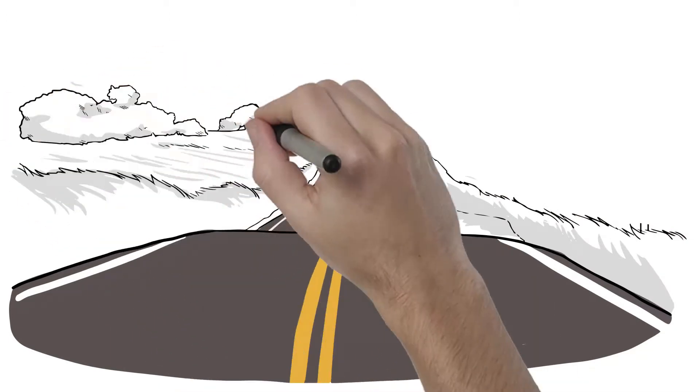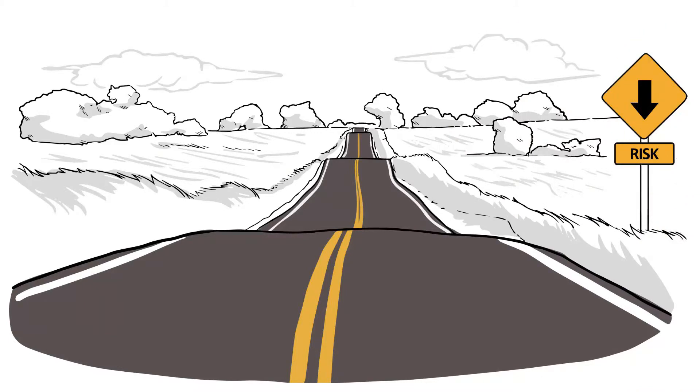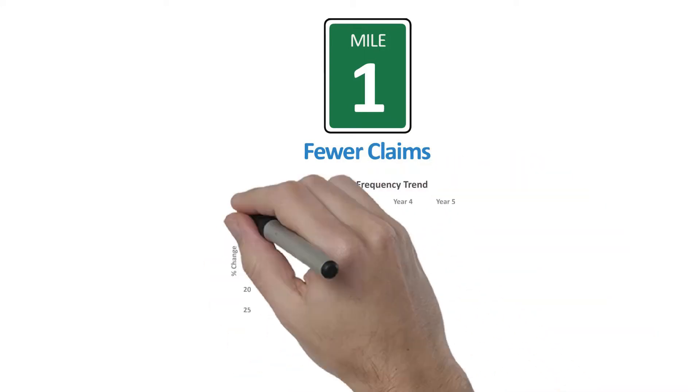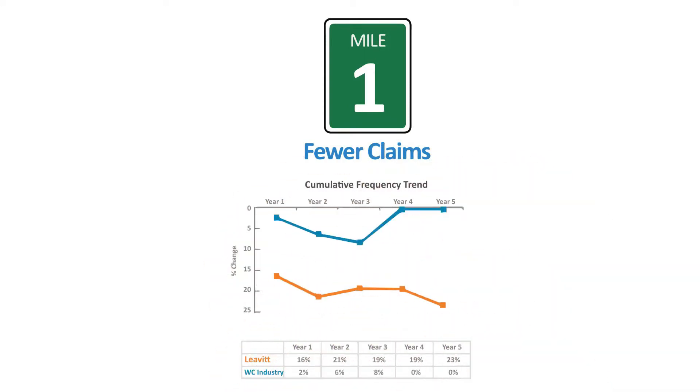This proactive approach followed a journey where each step, or mile marker as it's referred, focused on achieving a specific goal. Their first goal focused on reducing the number of injury claims. By reducing injury risk and keeping their employees safe, they saw an immediate decrease in the number of claims.